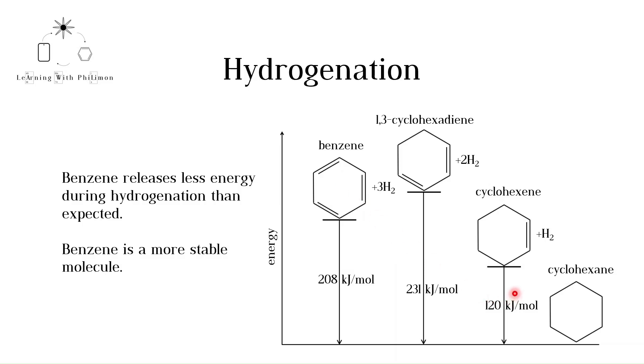However, when benzene reacts with three hydrogen molecules, it only releases 208 kJ per mole. This shows that benzene is a more stable molecule. This can also be seen in the diagram as benzene has a lower energy than 1,3-cyclohexadiene. The stability of benzene is due to delocalization, as will be discussed later in the video.